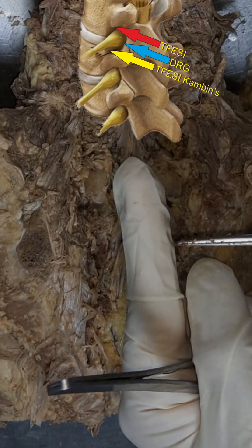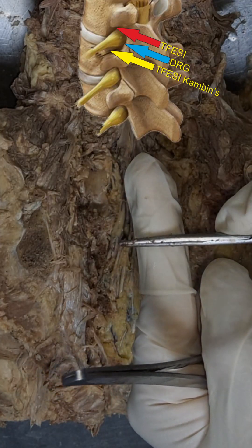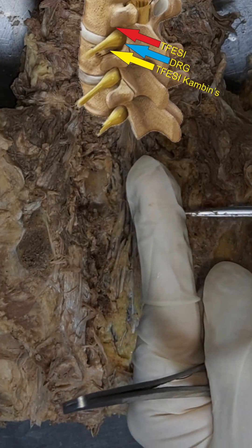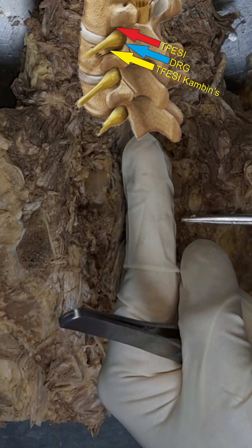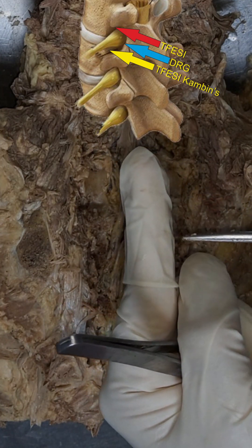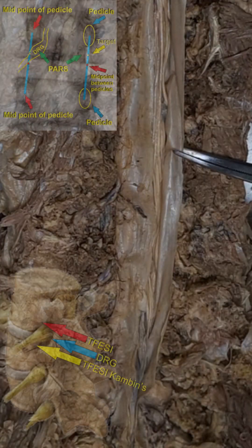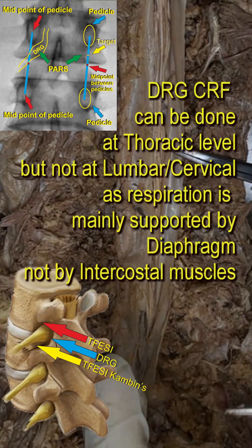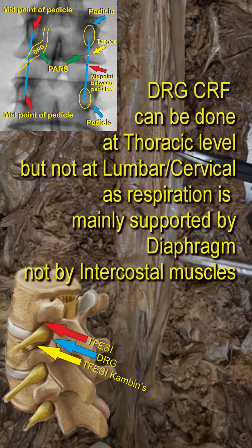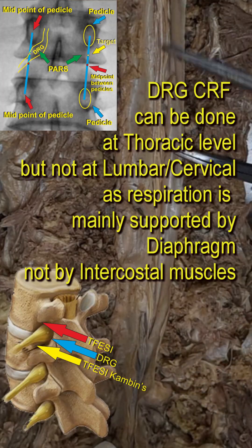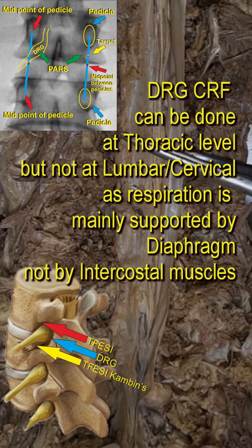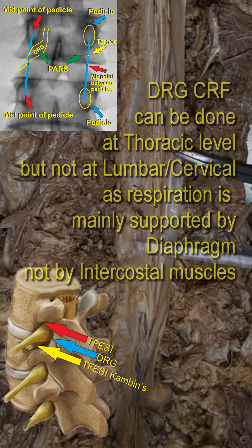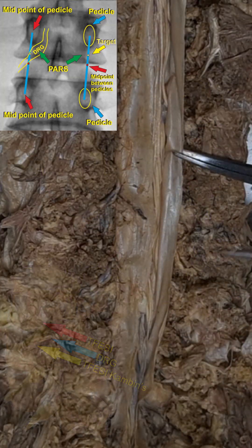For transforaminal epidural subpedicular approach, you go above the nerve. For Kambin's triangle, you go below the nerve. For dorsal ganglion RF, you come posterior to the nerve because it is pulse RF, not conventional RF. At the thoracic level, you can consider conventional RF because it does not affect the limbs and the diaphragm supports breathing. For post-herpetic neuralgia or other causes, you can do conventional RF at the thoracic level, but not at the cervical and lumbar levels.